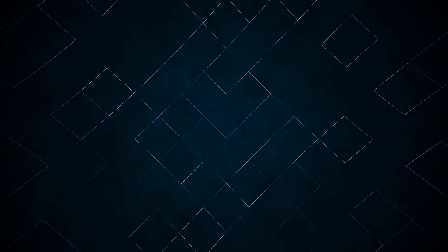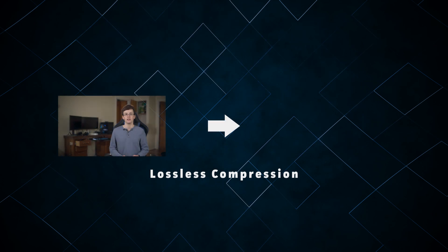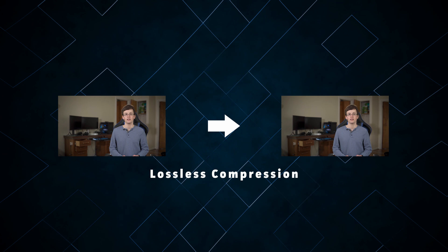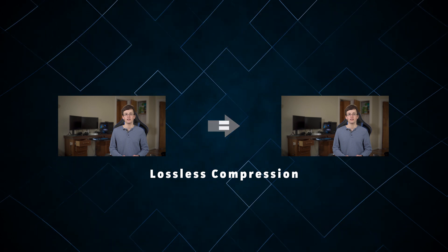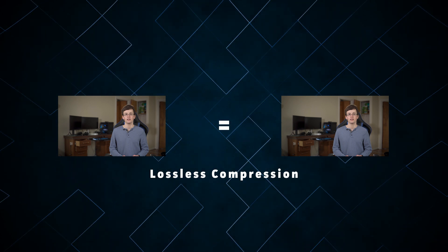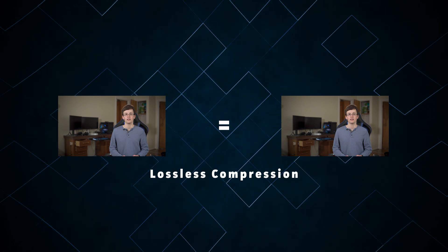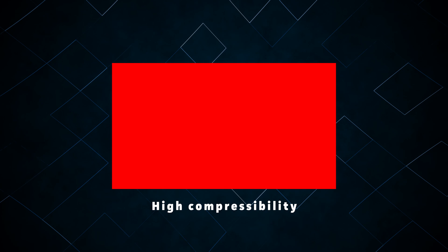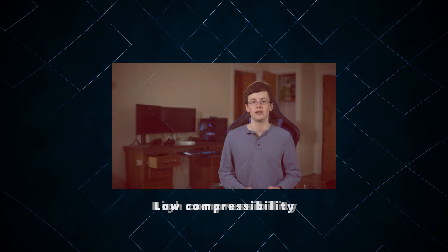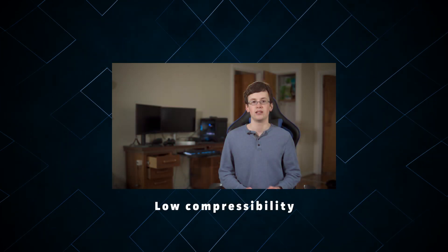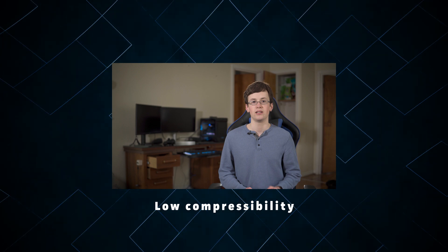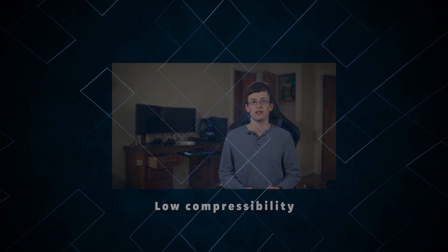Lossless compression compresses the image without losing any fine detail whatsoever. You could put an image through a lossless codec infinitely many times, and it would still come out the other end looking exactly the same as it started. However, the requirement that no information can be lost means that there isn't much you can do to reduce the bit rate. Simple images can be compressed very effectively, but complex ones like we see in the real world can't be compressed much without losing information. As such, lossless codecs typically have a very high bit rate, and are not very convenient to work with.